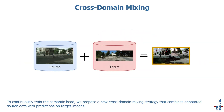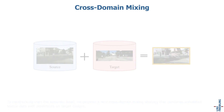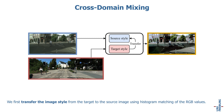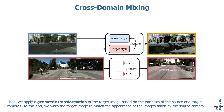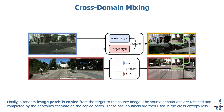To continuously train the semantic head, we propose a new cross-domain mixing strategy that combines annotated source data with predictions on target images. We first transfer the image style from the target to the source image using histogram matching of the RGB values. Then, we apply a geometric transformation of the target image based on the intrinsics of the source and target cameras. To this end, we warp the target image to match the appearance of images taken by the source camera. Finally, a random image patch is copied from the target to the source image. The source annotations are retained and completed by the network's estimate on the copied patch. These pseudo-labels are then used in the cross-entropy loss.